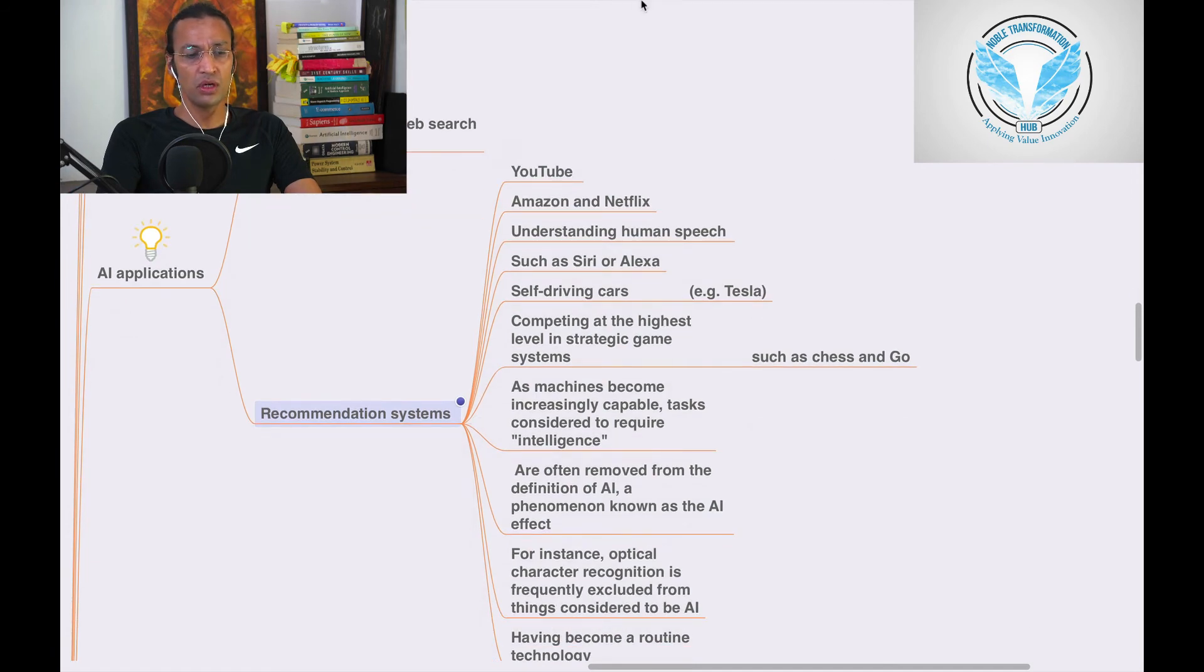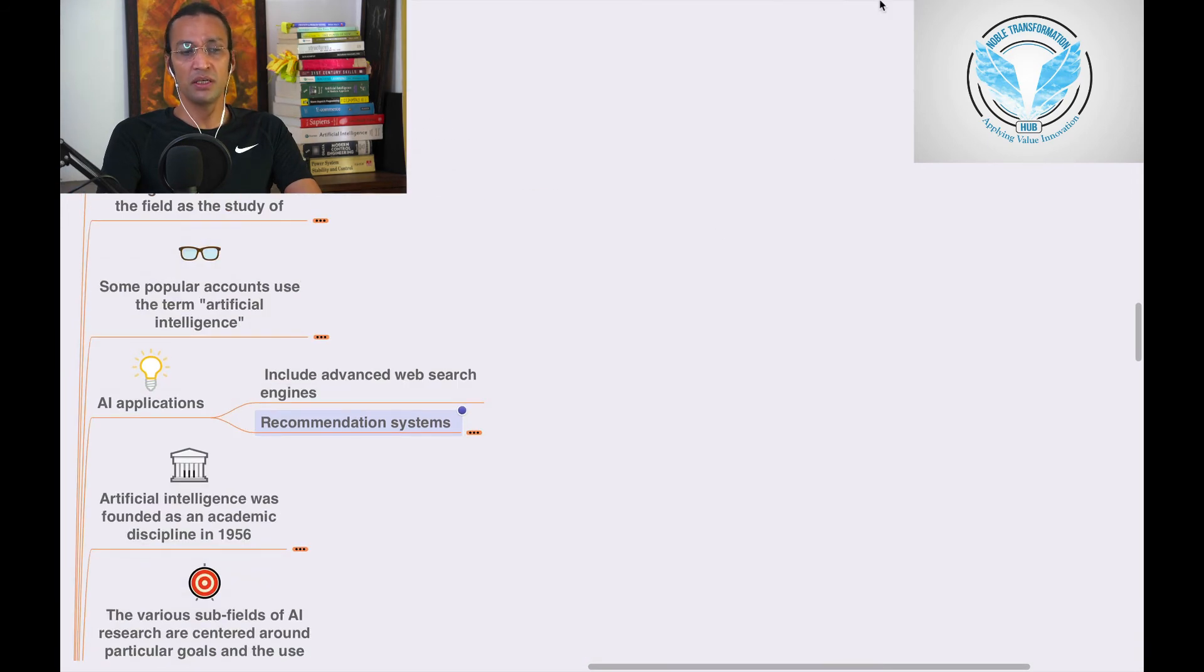Thank you. We'll move to the next video where we'll understand that artificial intelligence was founded as an academic discipline in 1956. We'll go deep into the past, present, and future of AI, so keep watching Noble Transformation Hub.